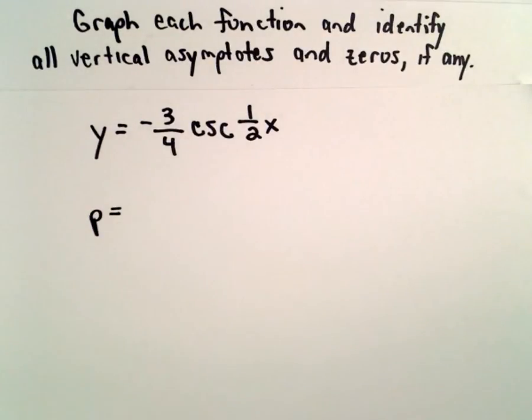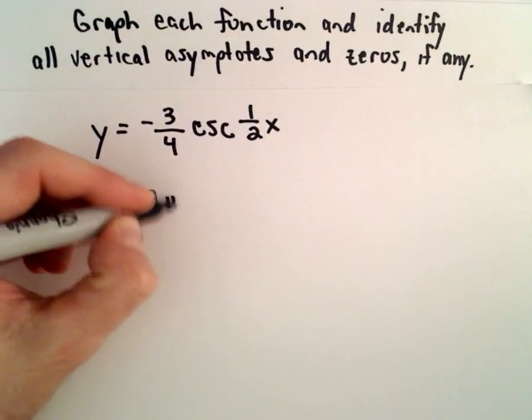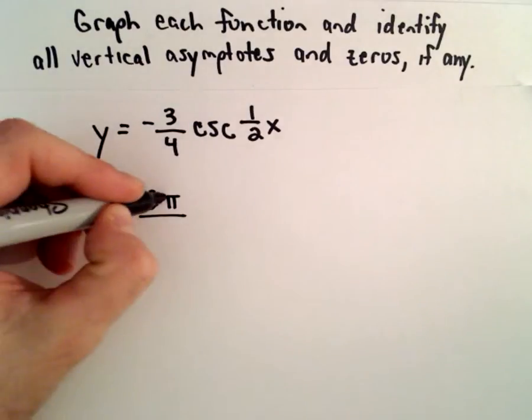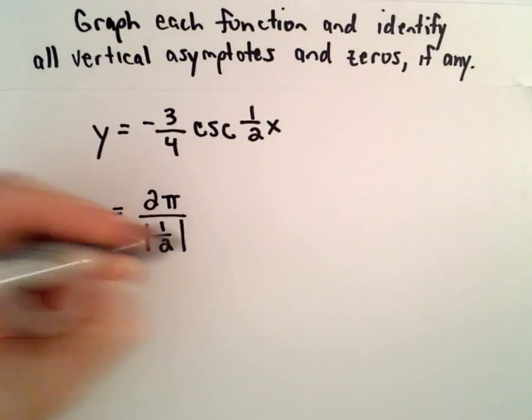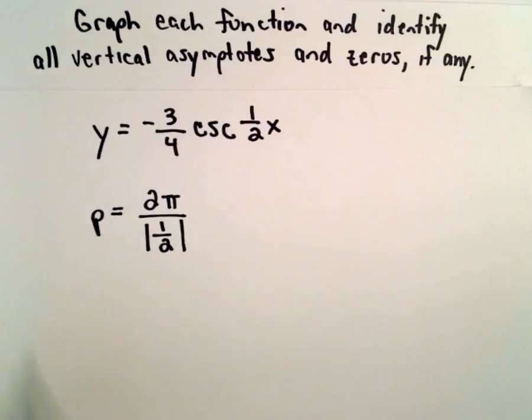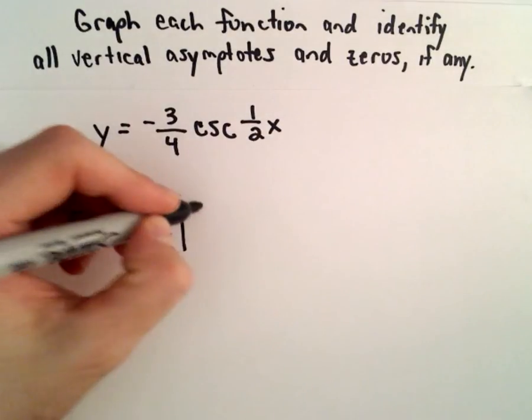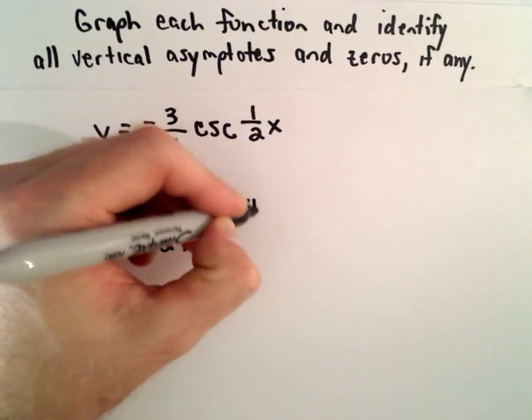The first thing I'm going to do is determine the period. So cosecant has a period of two pi, and we'll divide that by the absolute value of b, which in this case is one-half. So two pi divided by one-half will give us four pi.